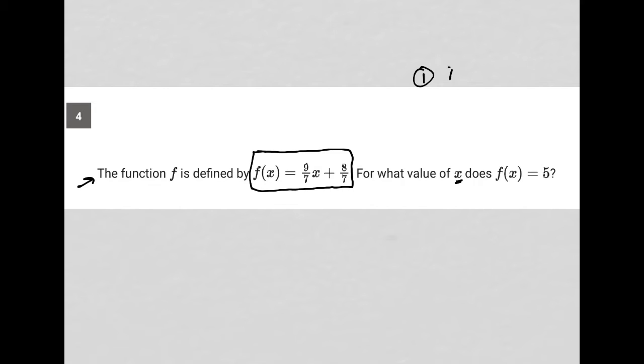First of all, we could just throw this into Desmos. We can actually graph this function into Desmos, and then we could figure out where f(x) is the same as y. So where does y equal 5? What is the x value where y equals 5? And you can try to trace on that graph until you find that information on Desmos.